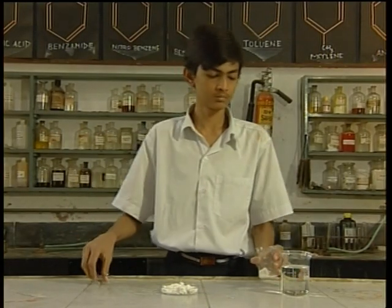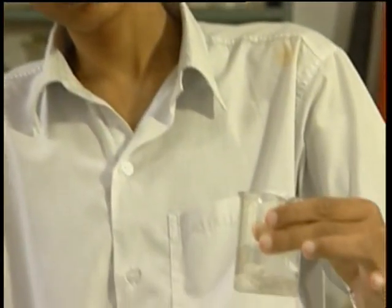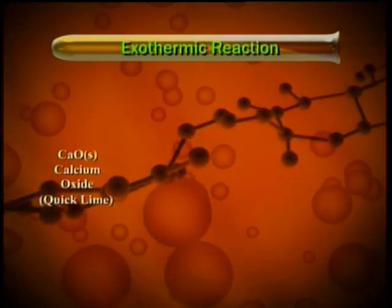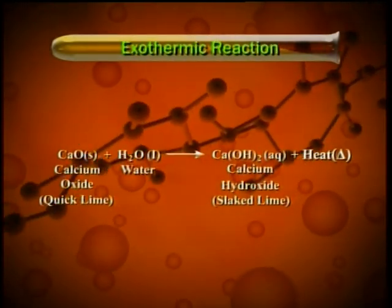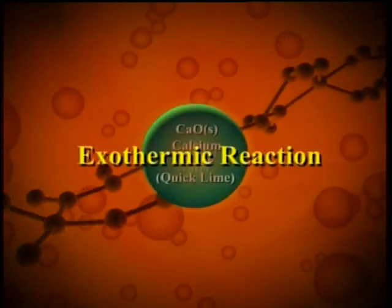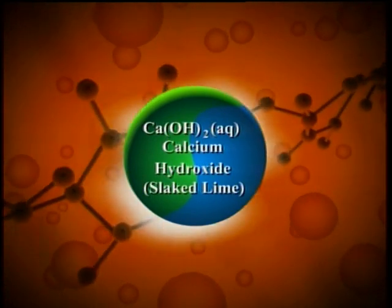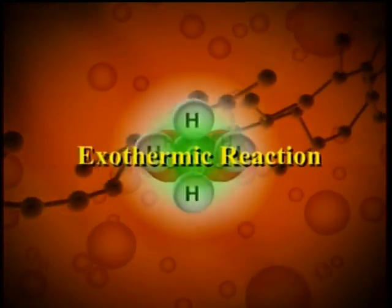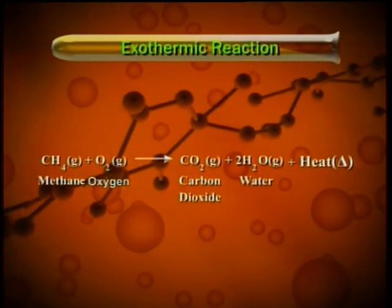Such a reaction where heat is released is known as an exothermic reaction. When quick lime (calcium oxide) reacts with water, slaked lime (calcium hydroxide) is formed and a lot of heat energy is produced: CaO + H₂O = Ca(OH)₂. This heat raises the temperature, making the reaction mixture hot. Another example of an exothermic reaction is the burning of methane and oxygen: CH₄ + O₂ = CO₂ + H₂O + heat energy.